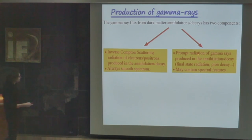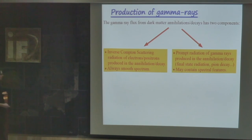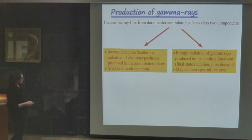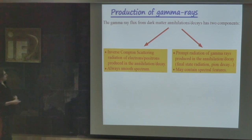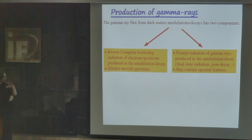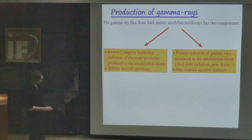The second component is prompt radiation of gamma rays — gamma rays directly produced in the annihilation. For example, dark matter could annihilate into b-bbar, the fragmentation of the b quarks produces neutral pions, and neutral pions produce photons. Also, this fragmentation could produce electrons and positrons that emit photons via final state radiation. From these mechanisms, annihilations into b-bbar always produce a smooth spectrum of gamma rays. However, this component has a new feature: in some cases you could produce a final state into gamma-gamma, giving a monochromatic photon. This is important for detection because there is no known astrophysical process that can produce gamma ray lines.